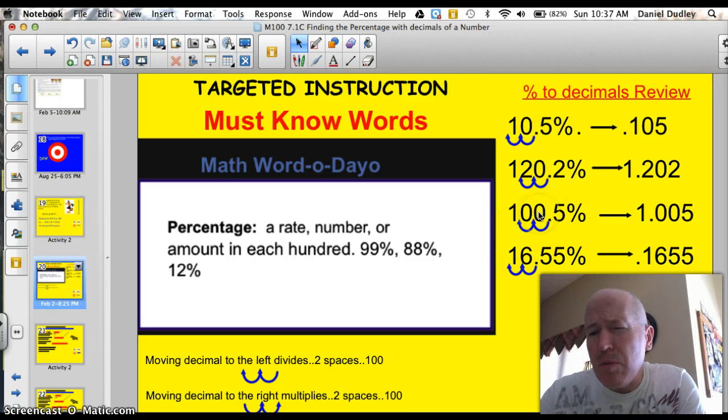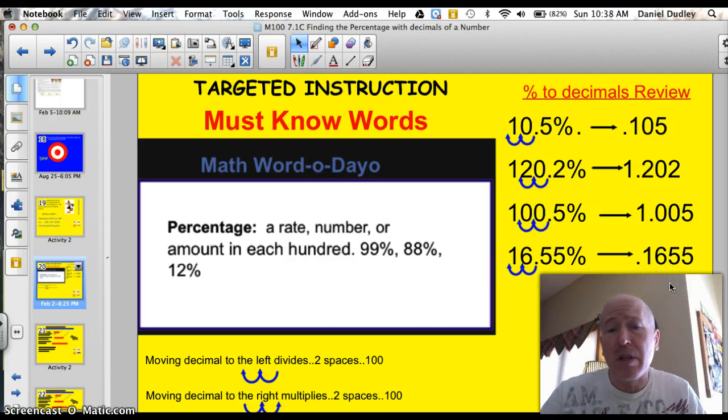This one here, it's 120.2%. Let's divide by 100. Move that decimal two spots. We've got 1.202 is our decimal equivalent. Same thing here. Notice the zeros. Just move the decimal two spots to the left. Divide by 100. We get 1.005. Does that make sense? Yes. Because 100% is equal to one whole, and then just a half of a percent. 16.55%, divide by 100, move that two spots to the left, we've got .1655. And of course, we just multiply by the decimal.